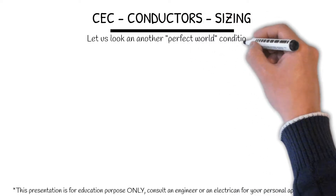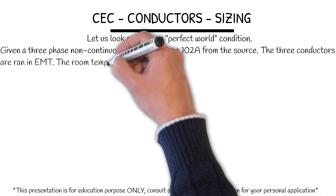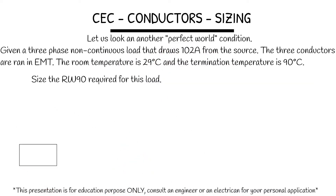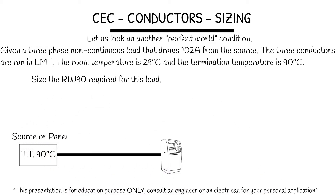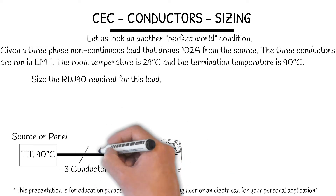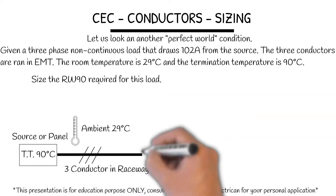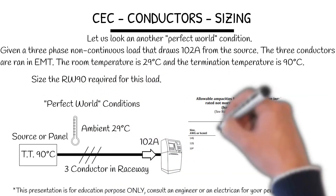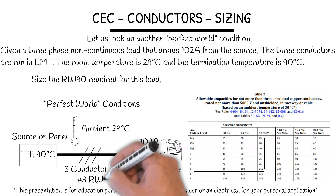Let us look at another perfect world condition. We're given a three phase non-continuous load that draws 102 amps from the source. The three conductors are RW90 in EMT, and the room temperature is 29 degrees Celsius, and the termination temperature is 90 degrees Celsius. Size the RW90 required for this load. This is the perfect world condition. Now let's recall Table 2. I can go down the 90 degree column. Where 102 amps fits will be 115 amp capacity for a number 3 size wire.